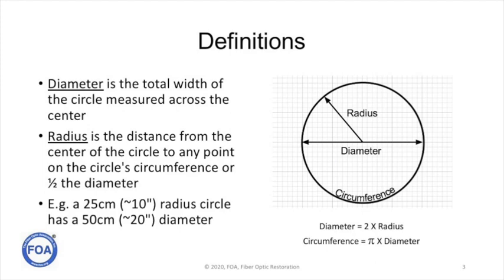We're going to use two terms here which we feel we should define: the diameter and the radius of a circle. The diameter is the total width of the circle measured across the center — that's what you measure, for example, when you measure the outside diameter of a fiber optic cable. On a circle, the radius is the distance from the center of the circle to any point in the circle's circumference, or outer rim, and that's half of the diameter.